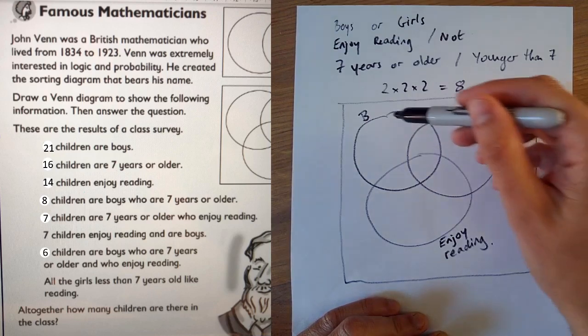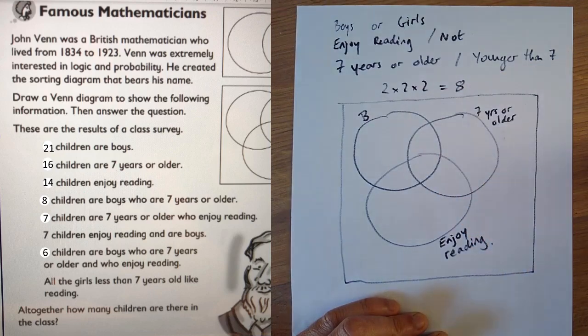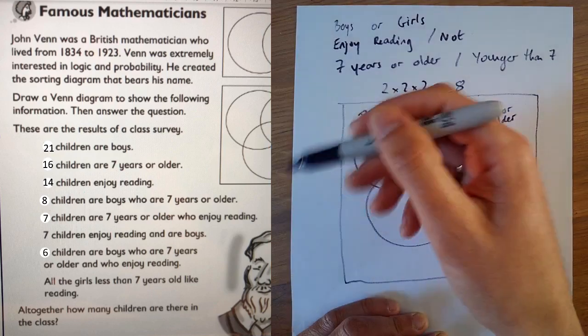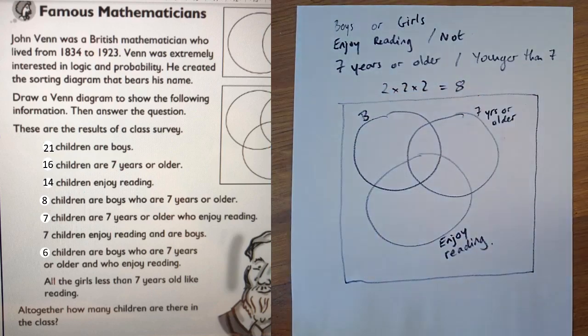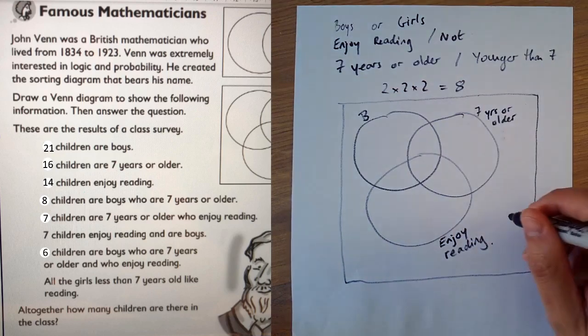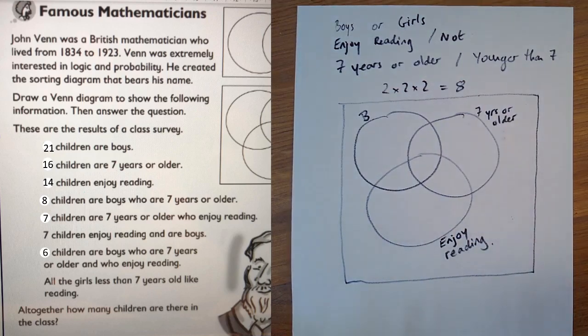Well, they have to be girls because all the boys are in this circle. They have to be younger than seven because everyone seven years or older goes in this circle. And they have to not enjoy reading. So here are the girls who are younger than seven and don't enjoy reading. We don't know anything about those from the wording of the question. But that's what this category here is, outside the circles. Let's not worry about that. Let's start filling in the circles.